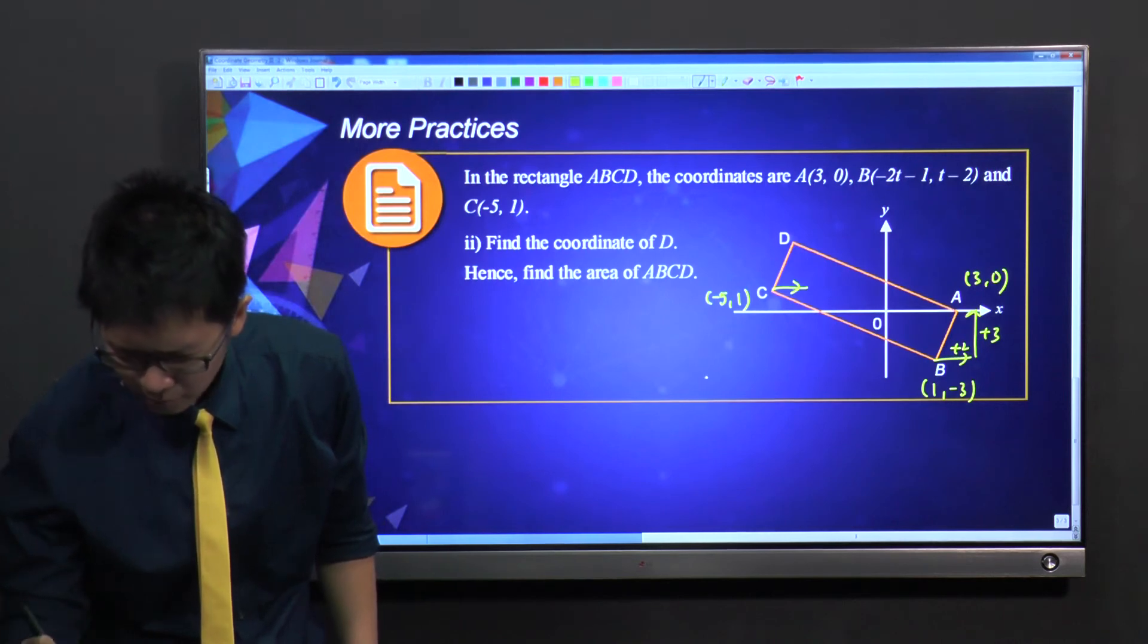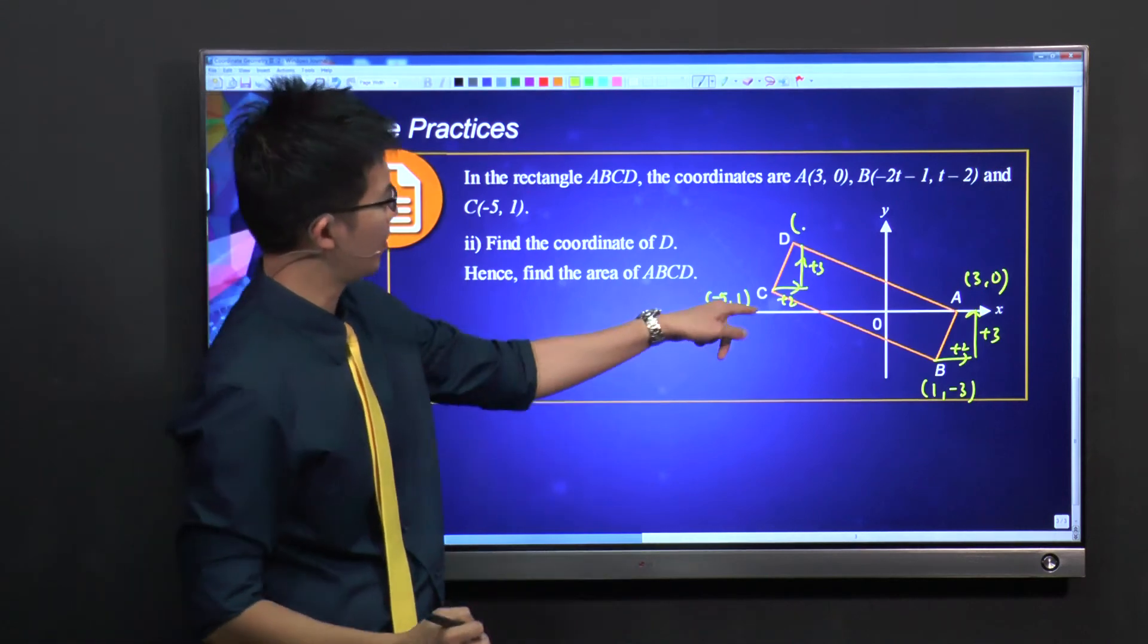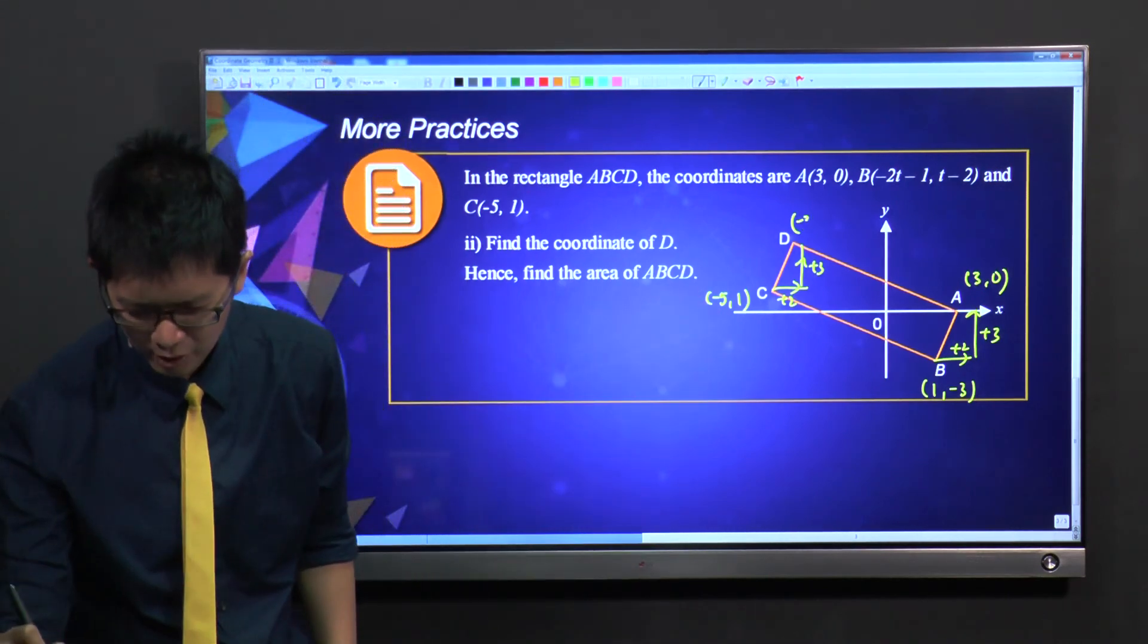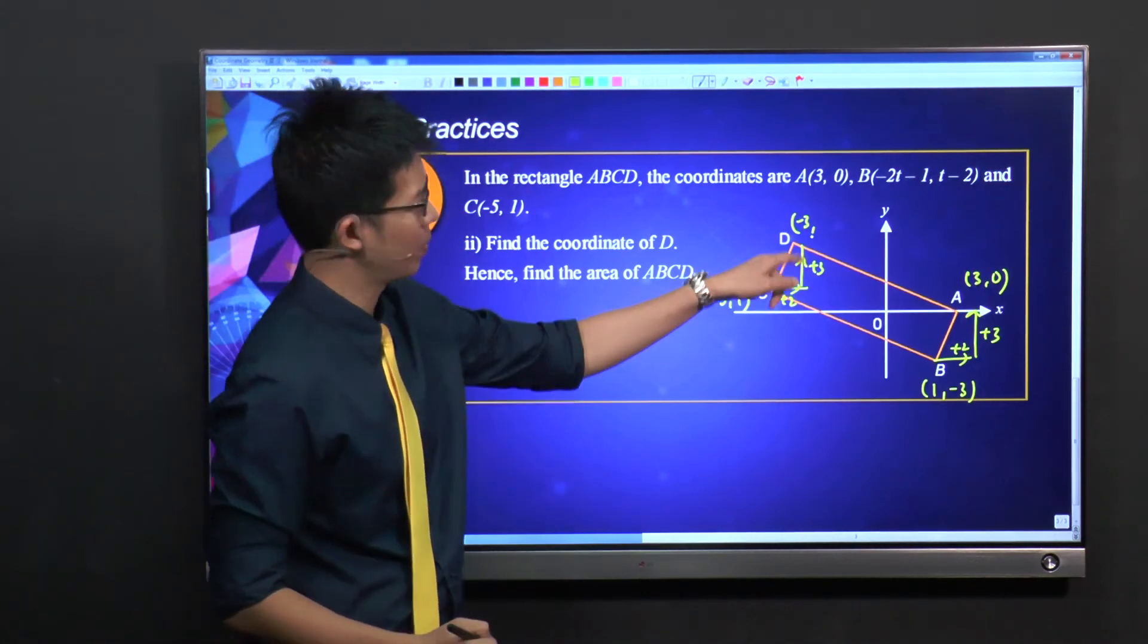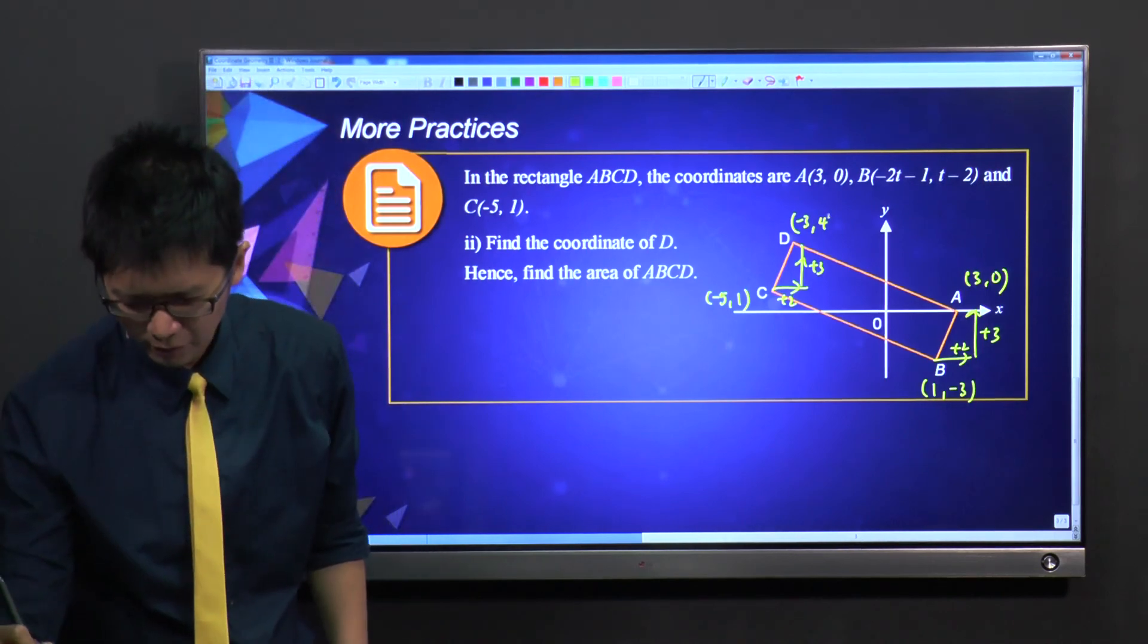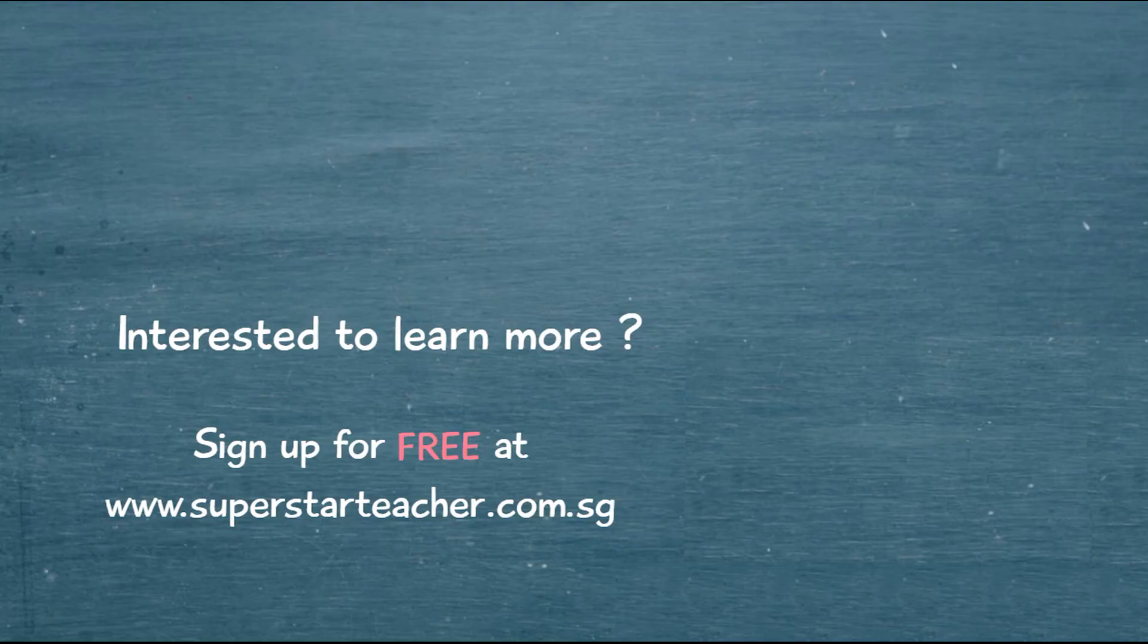So the same thing must happen here for CD. This will be +2, and then move up by 3 as well. So -5 plus 2 gives you -3, and 1 plus 3 gives you 4. So D is (-3, 4), and we are done. Thank you.